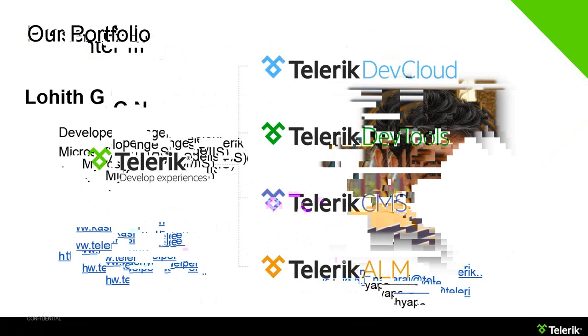Our portfolio is very simple. We have something called Dev Cloud — that's the mobile platform, the Telerik mobile platform. We also have developer tools — we're known for our developer tools in .NET, including ASP.NET, Ajax, MVC, Windows Forms, and WPF. We also have mobile controls. Our CMS is known as Sitefinity — an ASP.NET-based content management system. And in ALM, we have an Agile project management tool and Test Studio, which is a testing product.